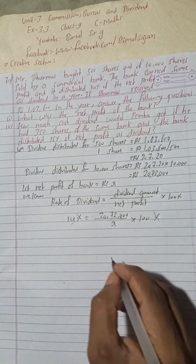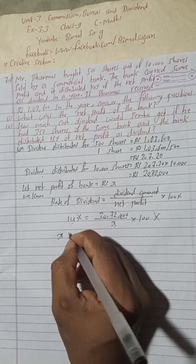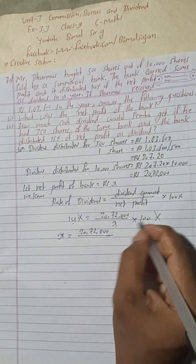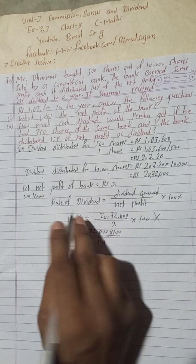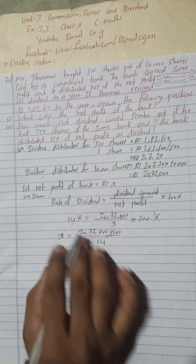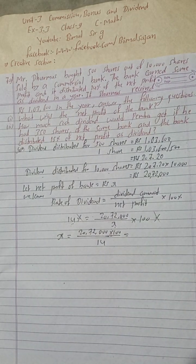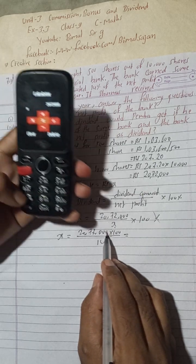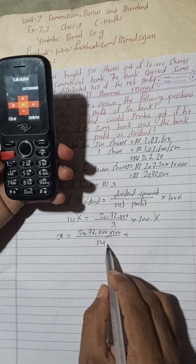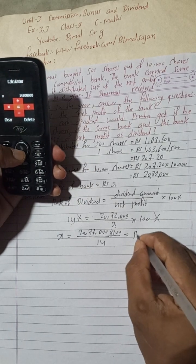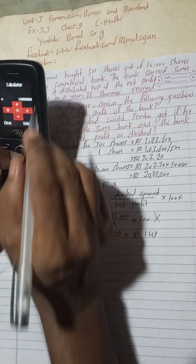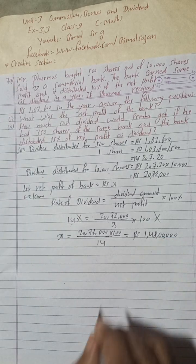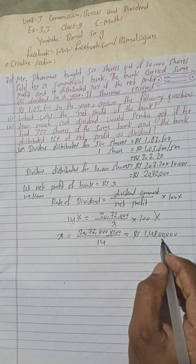Solving: x = 20,72,000 × 100 divided by 14. Calculating: 20,72,000 × 100 = 20,72,00,000, divided by 14 gives us 1 crore 48 lakh.